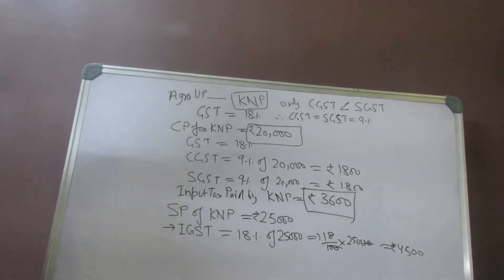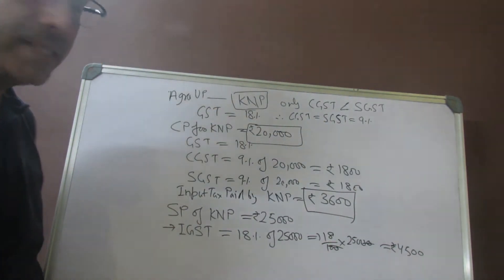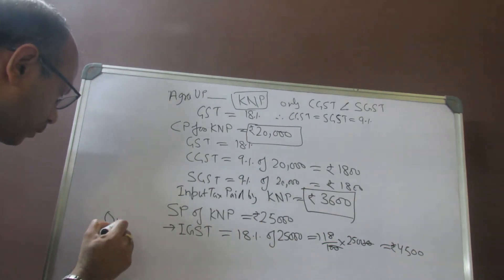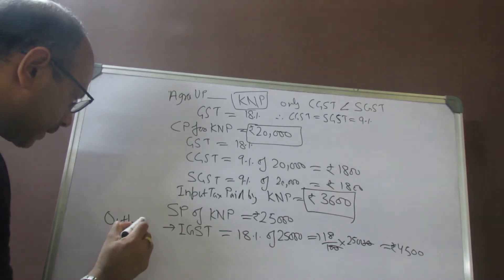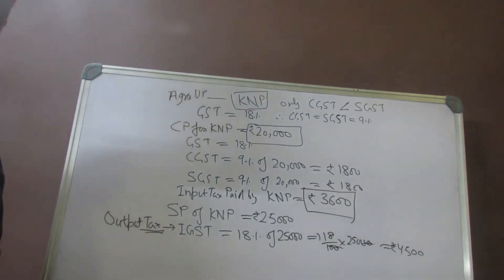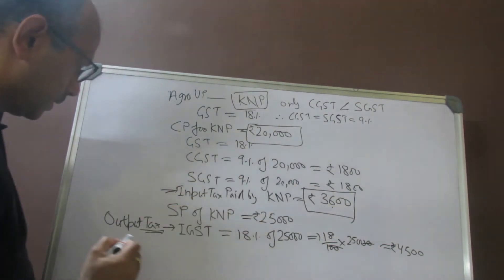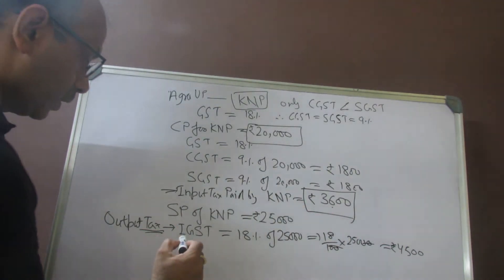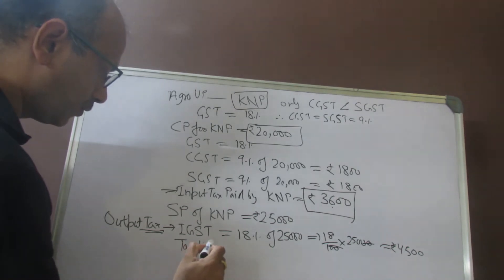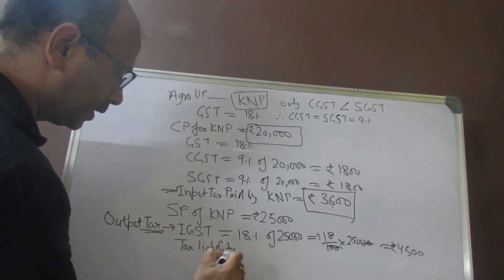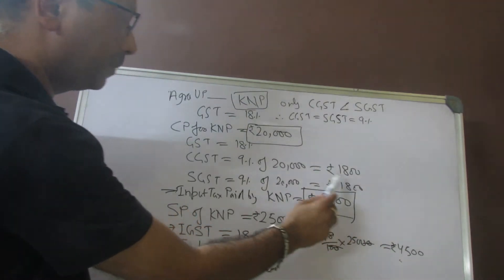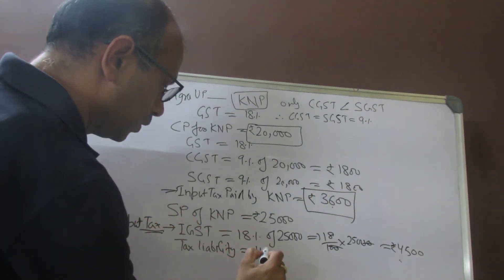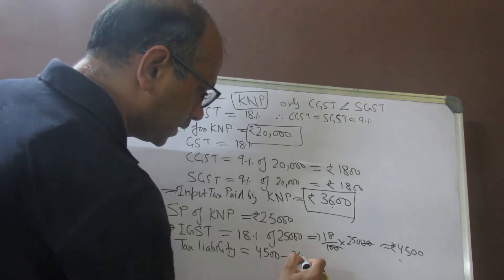He has collected IGST of 4,500. This is called output tax for the dealer in Kanpur. His input tax is 3,600, his output tax is 4,500. So the tax liability for this dealer is going to be output tax minus input tax, so 4,500 minus 3,600, and that is rupees 900. This is the tax liability for the dealer at Kanpur.